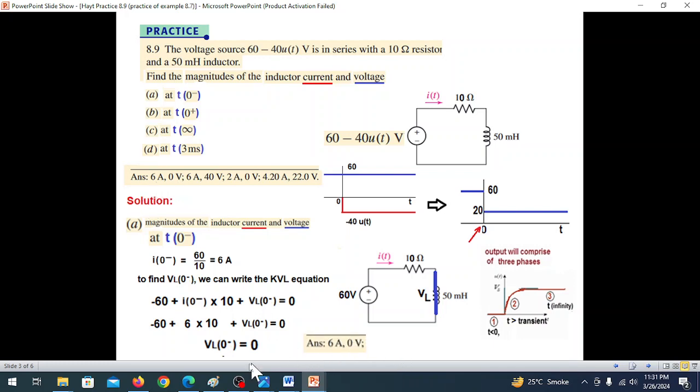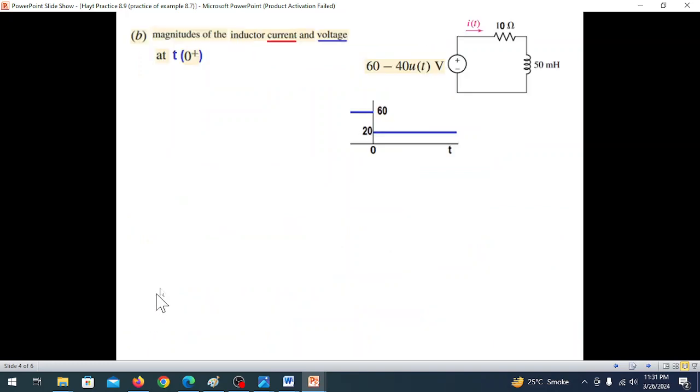Part (b): find current and voltage at t=0+. Using the important property that inductor current does not change instantaneously, i(0+) = i(0-) = 6 amperes.